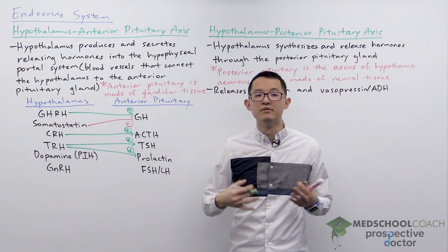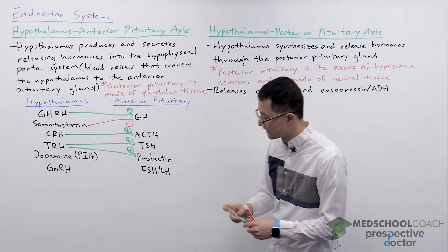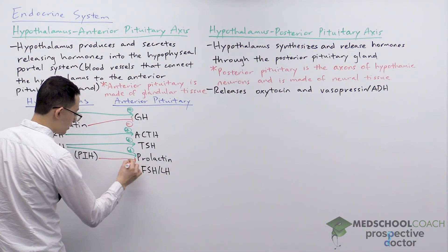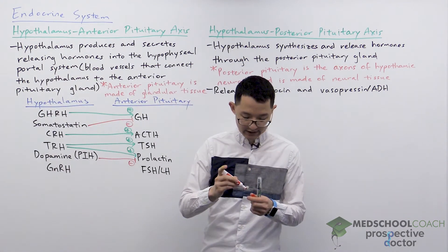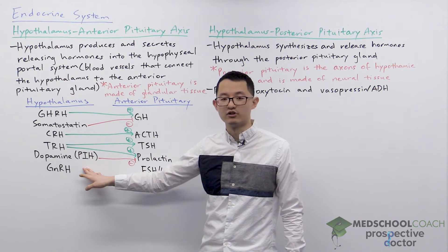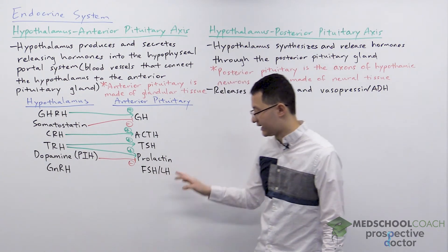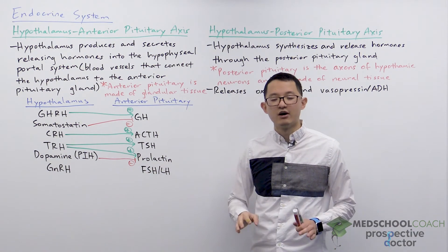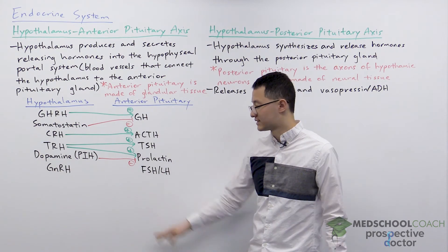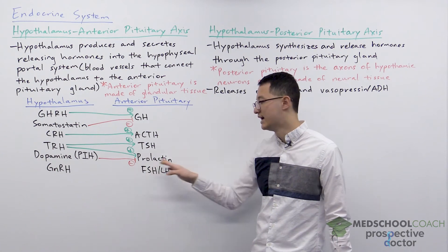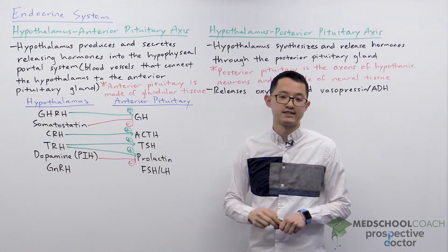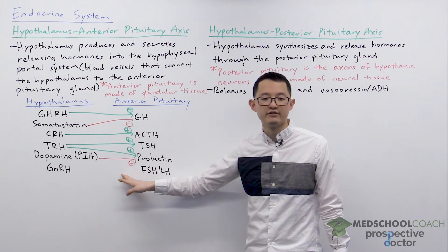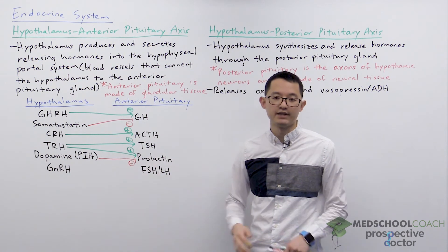Prolactin has an important role in milk production in females. At the same time, the hypothalamus secretes dopamine, which inhibits the release of prolactin from the anterior pituitary gland. For this reason, dopamine is also called prolactin inhibitory hormone (PIH). Prolactin is predominantly under inhibitory control, meaning dopamine has a much more substantial inhibitory effect than TRH has in stimulating prolactin secretion. So in order for prolactin to be secreted, you need to prevent the hypothalamus from secreting PIH.